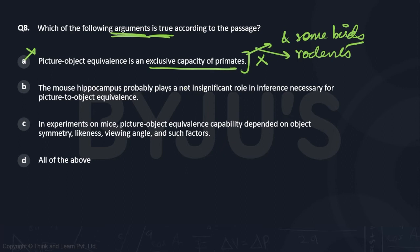The mouse hippocampus plays a, see this is important now, reading the option carefully, a not insignificant role. That means it plays a significant role. This is true as per the passage. That the mouse hippocampus plays a significant role in inference necessary for picture to object equivalence. Stated right in the passage.